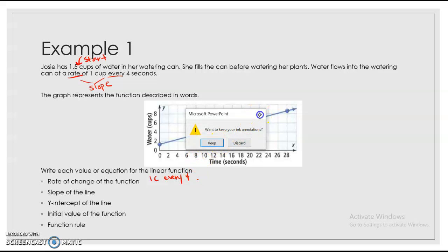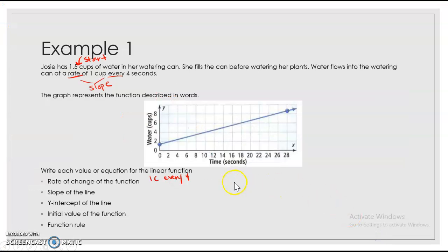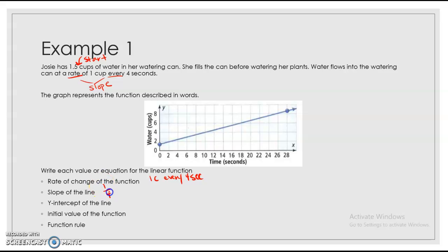All right, so one cup every four seconds. Rate of change is your slope. So what that means, your slope of your line is one-fourth. We could also write this up here as one-fourth. But rate of change, slope of the line, same thing, both one-fourth.